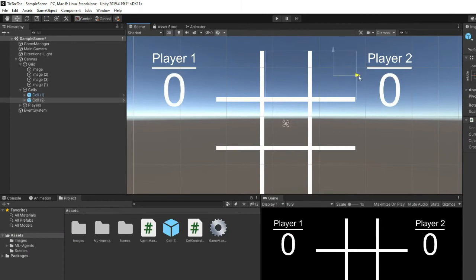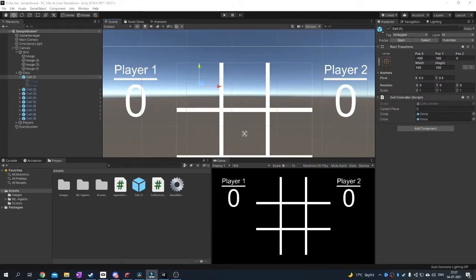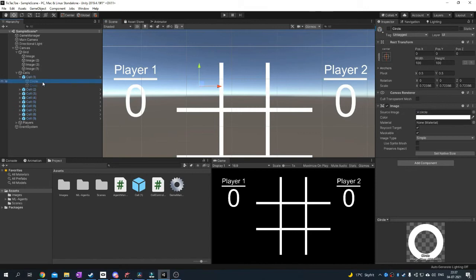Then I created nine cells, with each cell containing two child images, one being the circle and one being the cross. Each cell also got the cell controller script.